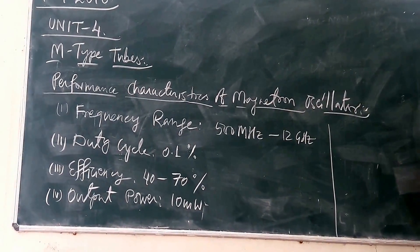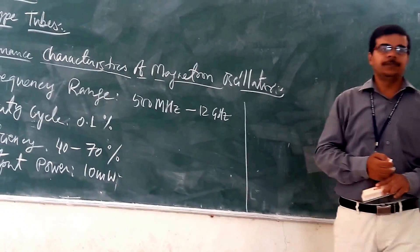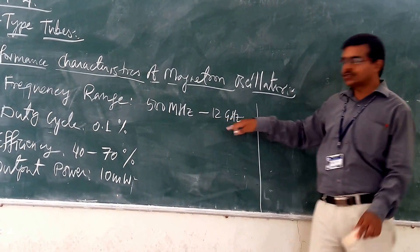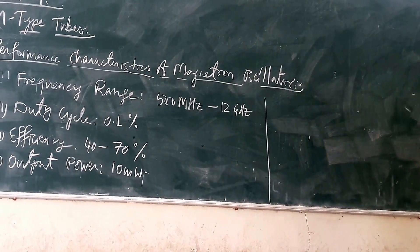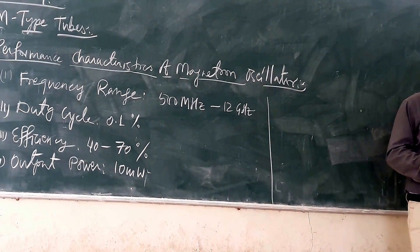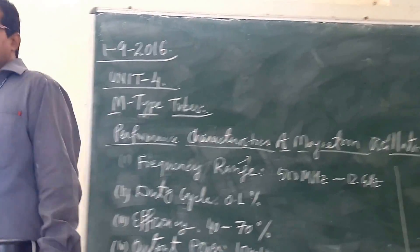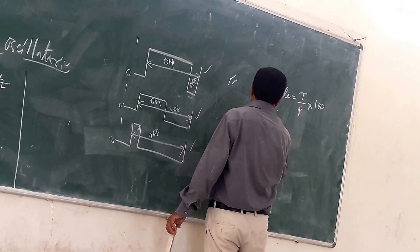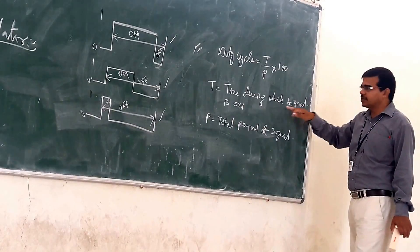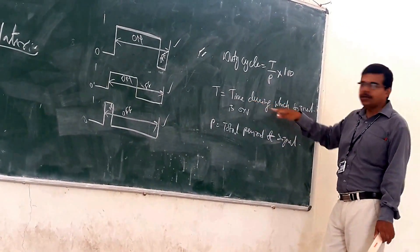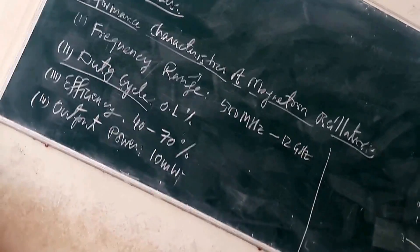The performance characteristics of the magnetron are: frequency range is from 500 MHz to 12 GHz, and the duty cycle is 0.1%. The duty cycle is defined as the time during which the signal is ON divided by the total period of the signal — the total period includes both the ON and OFF time.